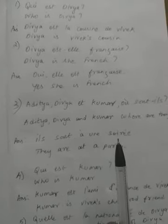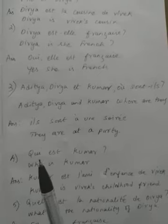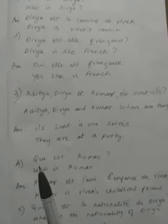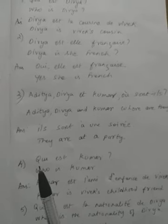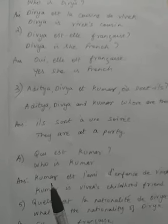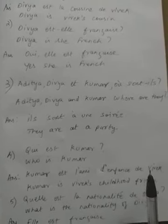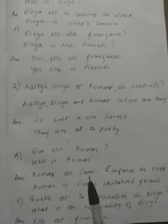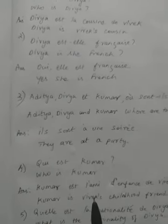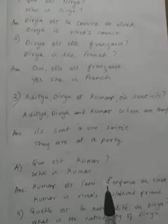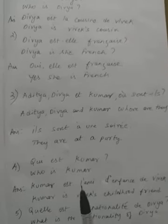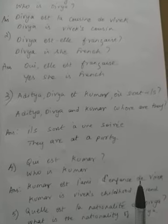Fourth question: 'Qui est Kumar?' — Qui means 'who'. Kumar is Vivek's childhood friend — 'l'ami d'enfance de Vivek'. In French, you have to use the connecting word 'de' to join two nouns. So: Kumar est l'ami d'enfance de Vivek — Vivek's childhood friend.